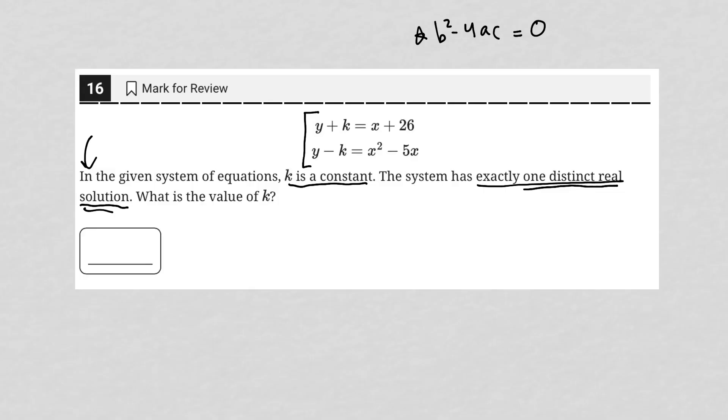Where does b squared minus 4ac equals 0 come from? Well, it comes from our quadratic equation, which is ax squared plus bx plus c is equal to 0. So what this is telling me is that I need to somehow get this system of equations to look like this here.